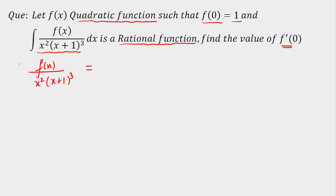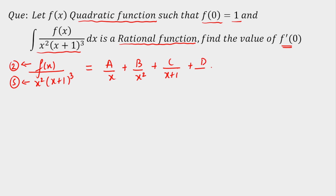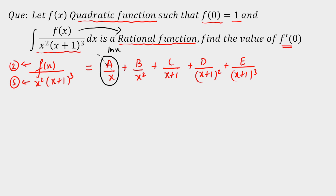The numerator degree is 2 (quadratic function) and the denominator degree is 5, so I can apply partial fractions. I can write this as a/x + b/x² + c/(x+1) + d/(x+1)² + e/(x+1)³. Now, if I integrate a/x, I get a·ln|x|, which is not a rational function. Since the integration must be rational, this term must be 0, meaning a = 0.